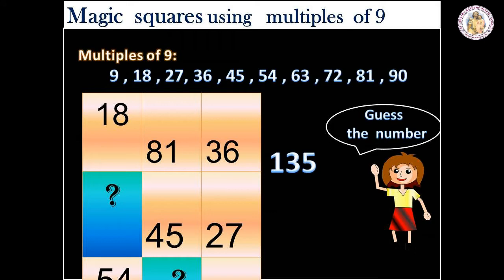First, we are going to create magic squares using multiples of 9. What is the multiples of 9? The multiples of 9 are 9, 18, 27, 36, 45, 54, 63, 72, 81 and 90.